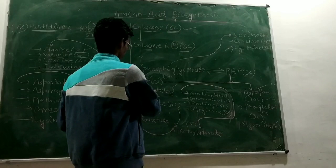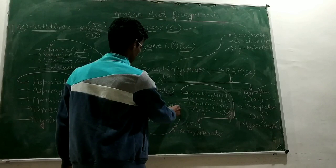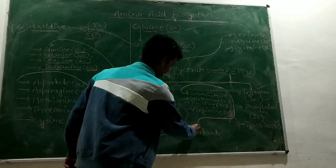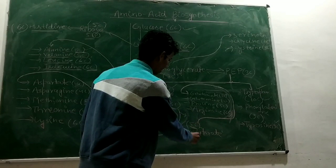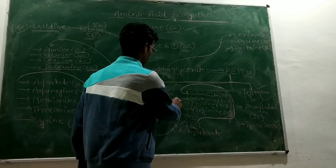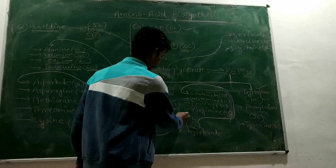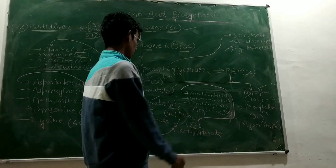Citrate is converted by the pyruvate dehydrogenase enzyme complex. Citrate is a 6-carbon containing compound. It becomes alpha-ketoglutarate, which is a 5-carbon containing compound. When this happens, CO2 is released. Therefore, one carbon is lost. We now have a 5-carbon containing compound, which is alpha-ketoglutarate.